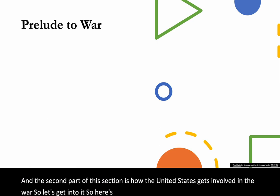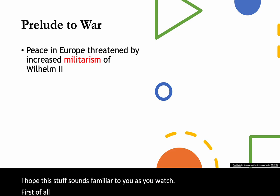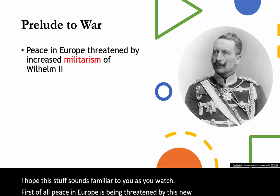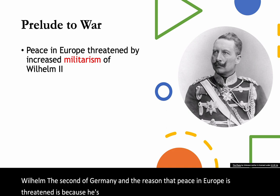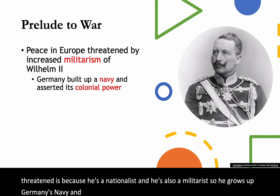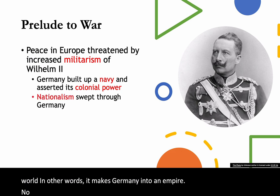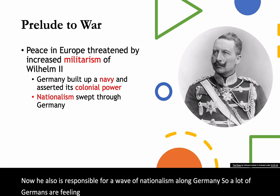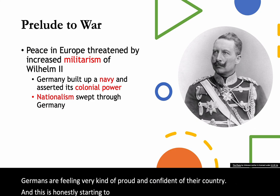Here's what you should have read — I hope this sounds familiar. First of all, peace in Europe is being threatened by this new leader named Wilhelm II of Germany. He's a nationalist and a militarist. He grows Germany's navy and helps Germany assert its colonial power around the world, making Germany into an empire. He's also responsible for a wave of nationalism across Germany, with a lot of Germans feeling very proud and confident of their country, which is starting to threaten other European countries. Some of those countries actually form alliances against the Germans.